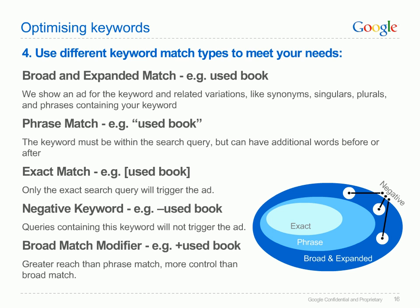Consider the match type you've set for each of your keywords. Broad match is the default keyword matching option. If you enter a keyword with no other parameters, it will be broad match. This means your ad will gain maximum exposure as it could be shown on variations, synonyms and plurals of your original keyword. For example, if I'm targeting the keyword 'used book', my ad could be triggered by a user searching on terms such as 'new book', 'used magazines' or 'used book Melbourne'. The benefit of broad matching is that you gain maximum exposure. The danger is that your ad shows for irrelevant searches that damage your CTR and ROI.